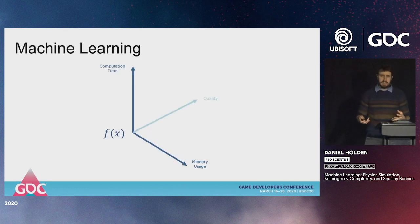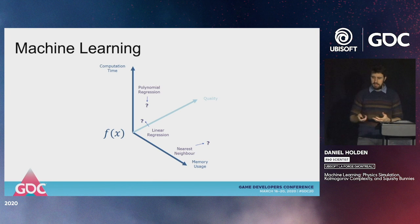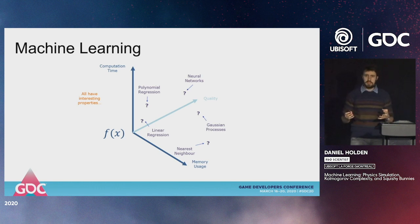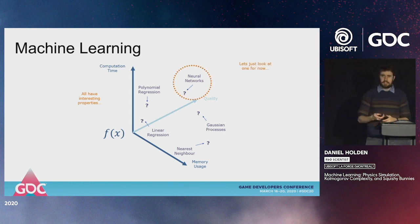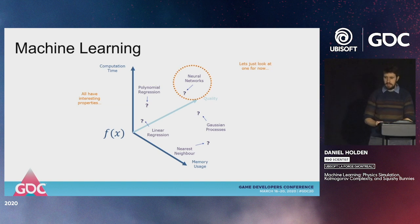Looking at machine learning, we have all sorts of programs on these axes: linear regression, polynomial regression, nearest neighbor regression, lots of different algorithms — all with interesting properties. Today we're going to look specifically at neural networks, which have a particularly interesting property for our task.